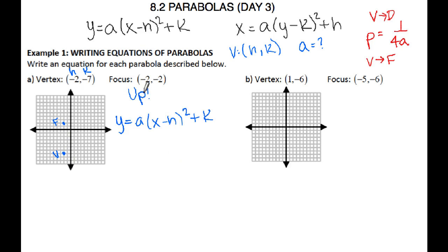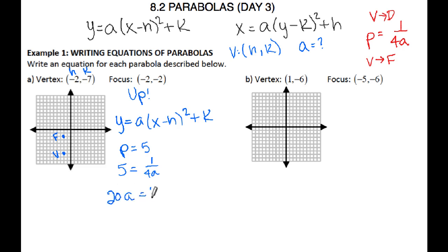The distance between vertex and focus gives us p. My focus should be at negative 2, negative 2. Comparing the y coordinates — from negative 7 to negative 2 — that's 5 units, so p equals 5. Using p equals 1 over 4a and cross multiplying, I get a equals 1 twentieth.